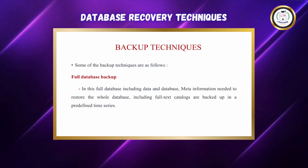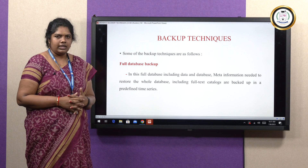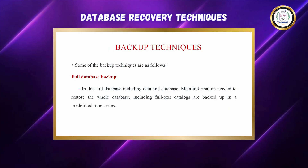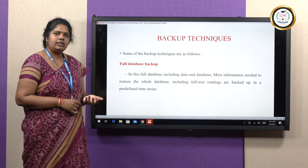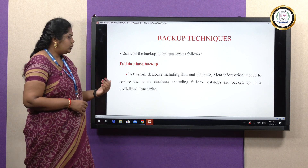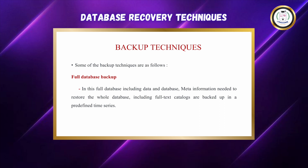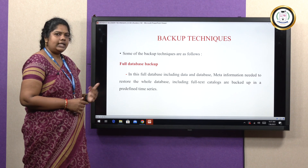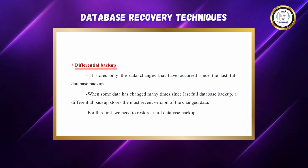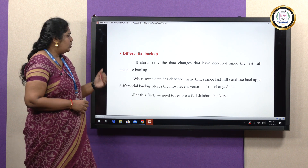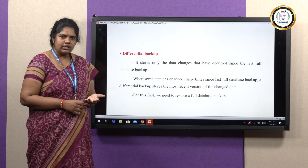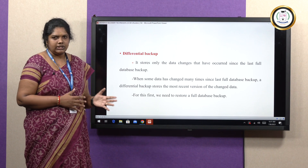Next, coming to the backup techniques. There are three different types of backup techniques in the recovery mechanism. The first one is a full database backup, which contains all data, the database, and meta information about the whole database, including any full-text catalogs, backed up at a predefined time. The second is the differential backup, which is only performed after the full database backup is complete. Whatever changes are made after the full database backup are saved in the differential backup.